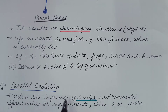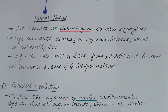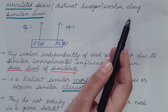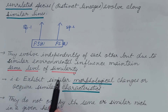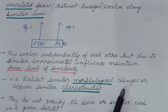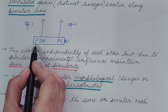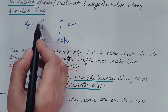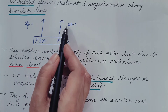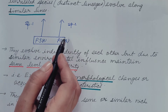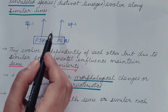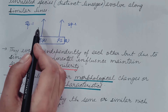Third is parallel evolution — under the influence of similar environmental opportunities or requirements, when two or more unrelated species of distinct lineages evolve along similar lines. They evolve independently of each other but, due to similar environmental influence, maintain the same level of similarity and exhibit similar morphological changes. Importantly, they do not occupy the same or similar niche in a given habitat. In the figure, parent species A evolves into species 1 and parent species B evolves into species 2, under the same environmental influence and at the same time, but independently and in different niches.